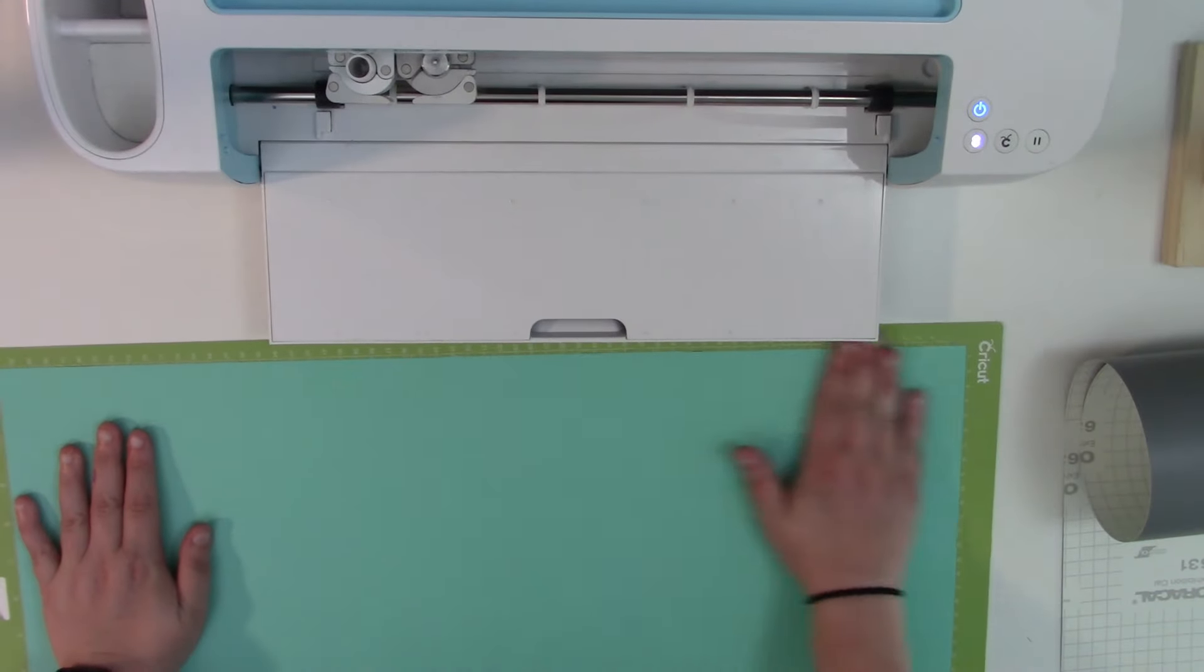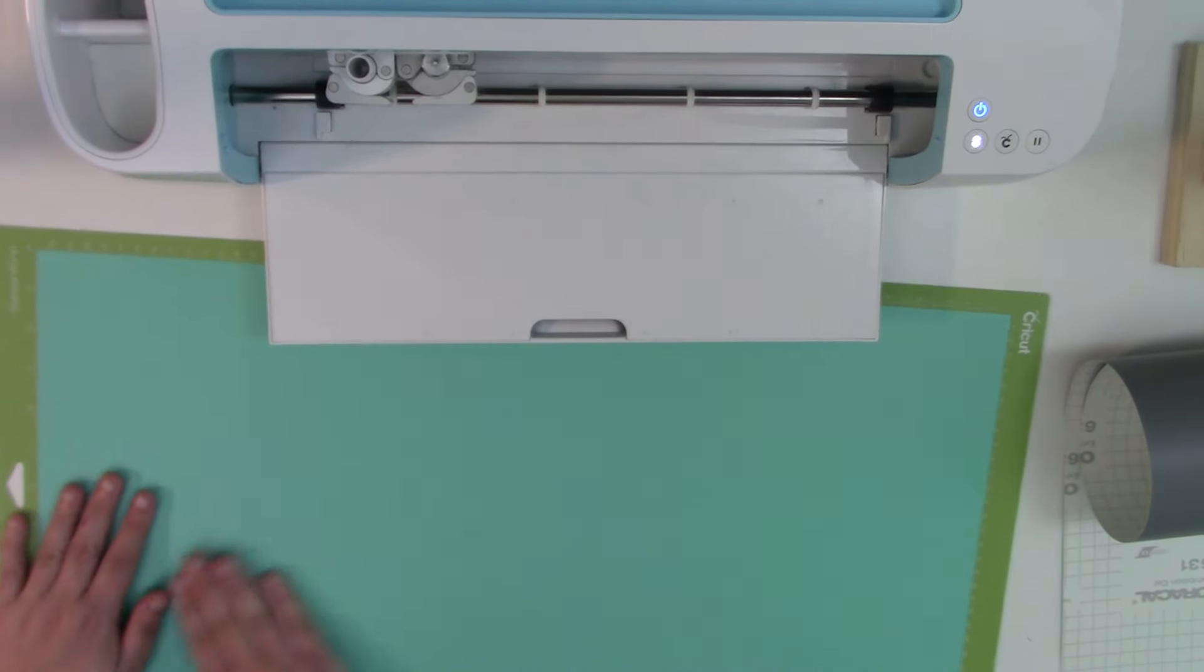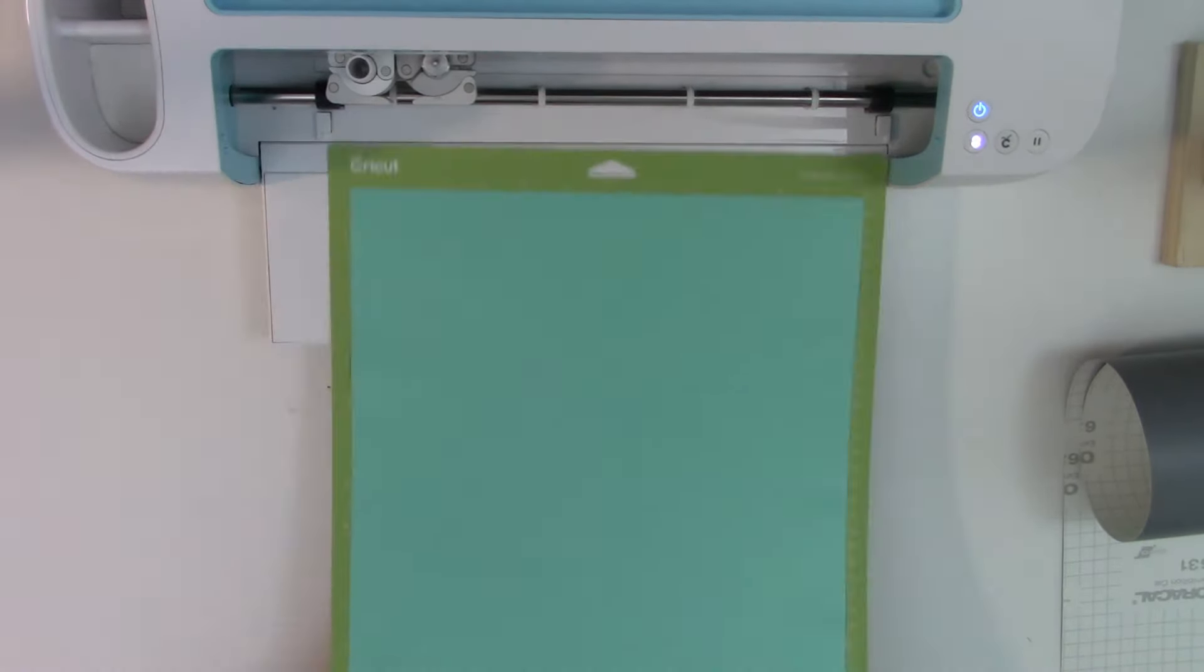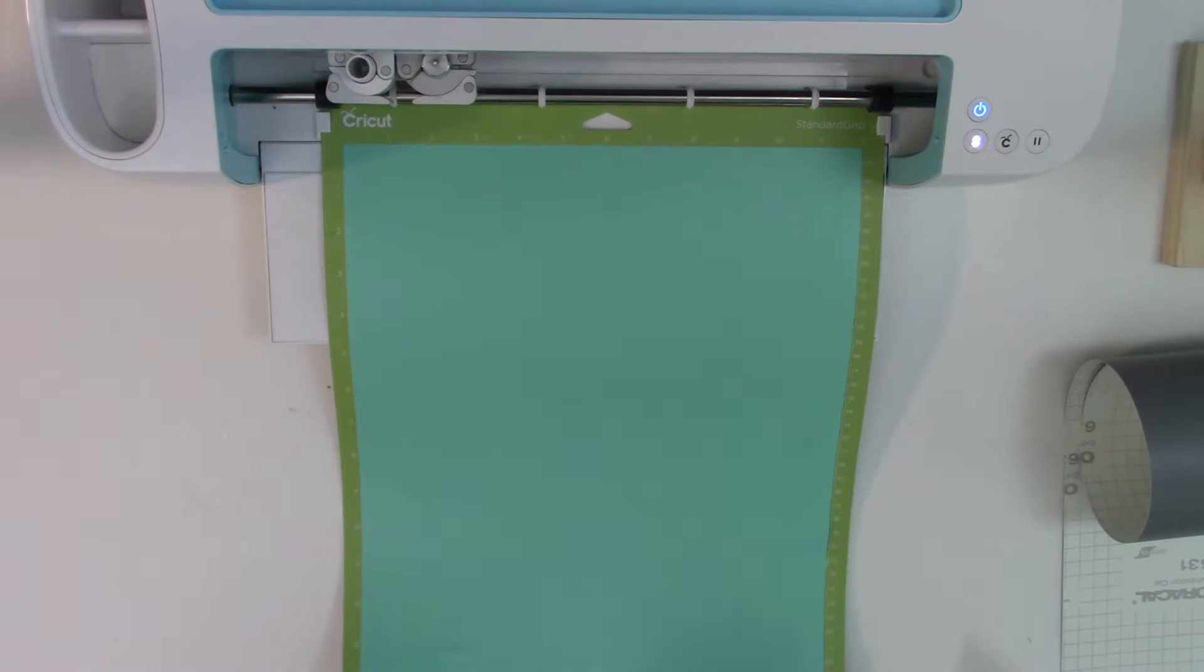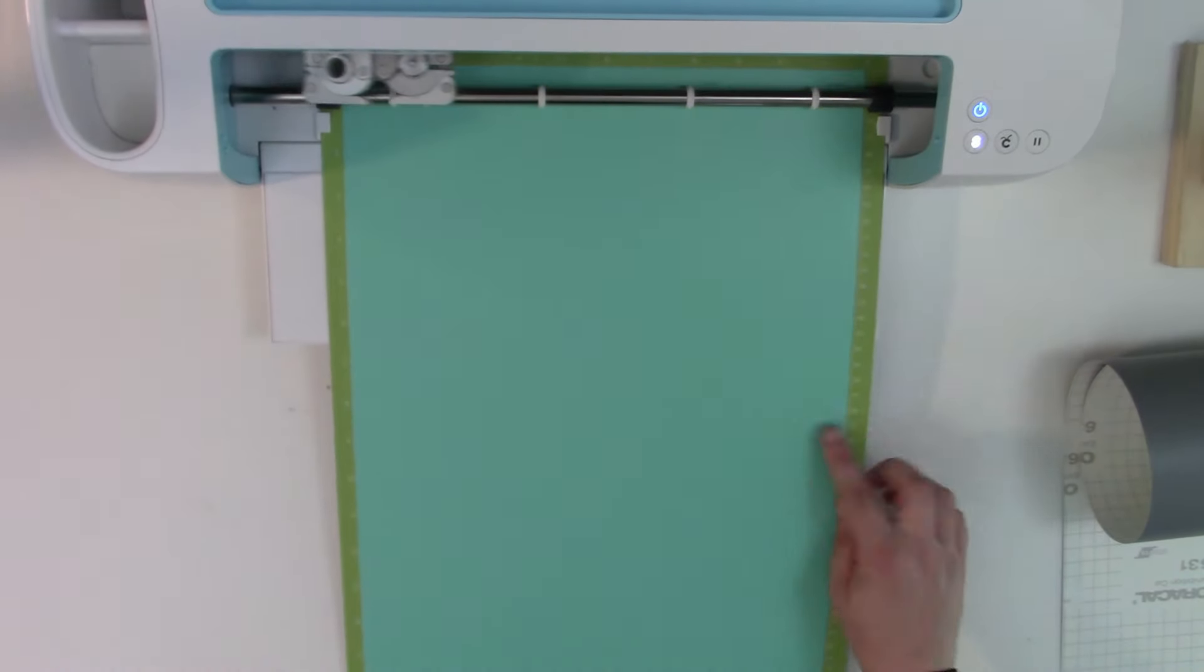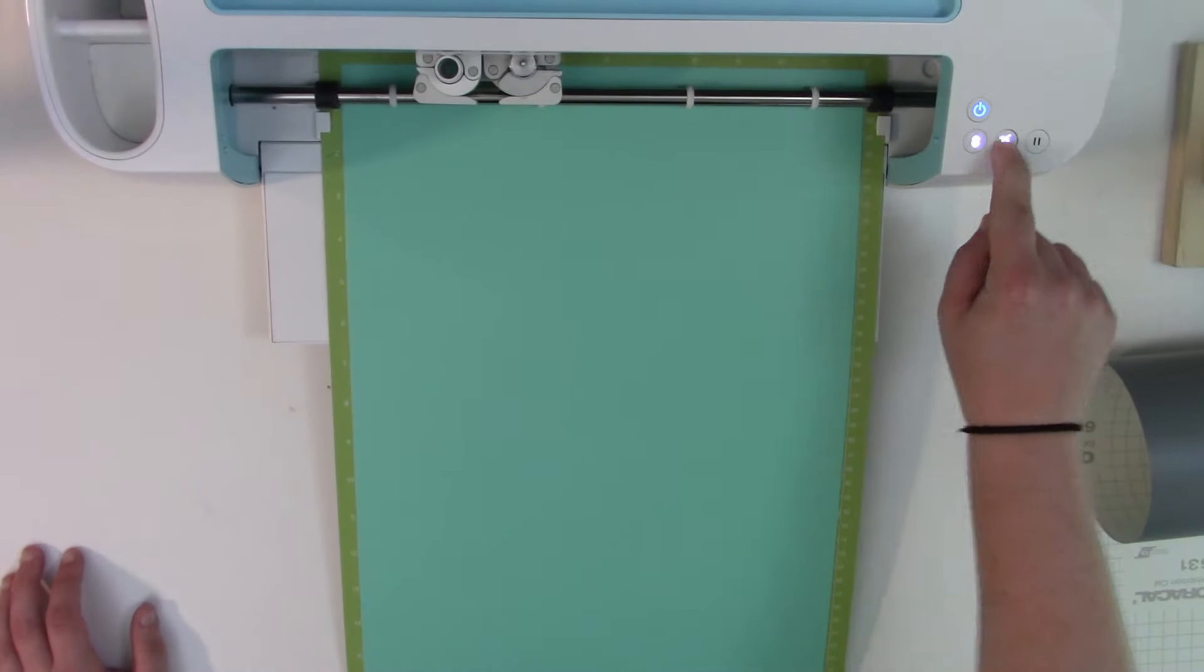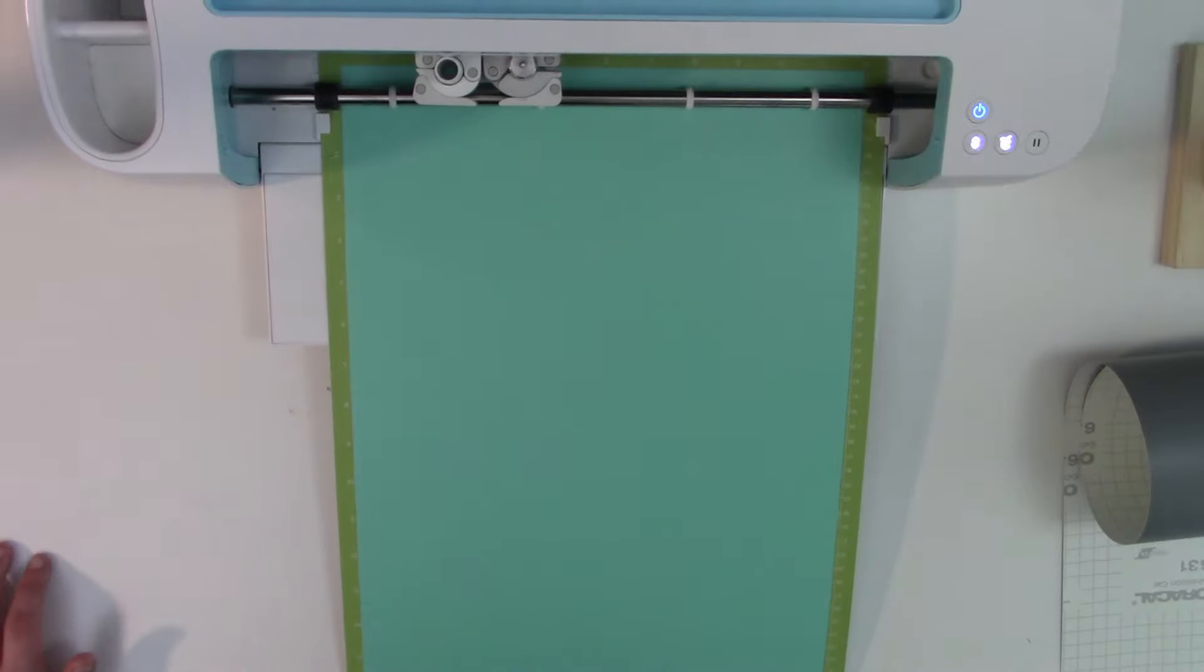And just like that, your vinyl is on your extra long mat. Now you do want to make sure you press it down. Make sure any of the wrinkles that you might have gotten in there are out. And then you can simply load your extra long mat right into your machine. And we are going to go ahead and hit the go button. I'm going to let you guys watch this cut.